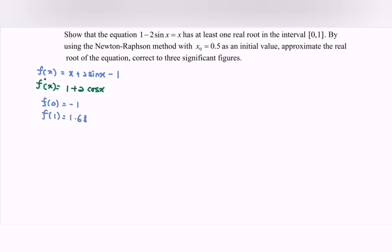Notice that we have opposite signs. Opposite signs show that there is at least one real root in the interval [0,1].